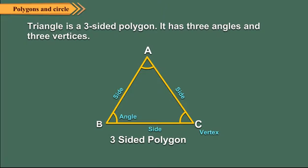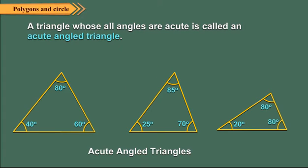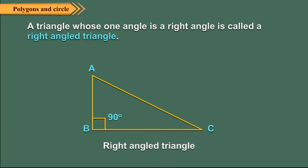We can classify triangles on the basis of their angles as well as on the basis of their sides. A triangle whose all angles are acute is called an acute angled triangle. In the figure, the angles of each triangle are acute, so these are acute angled triangles.